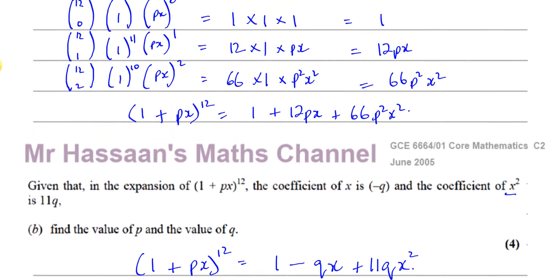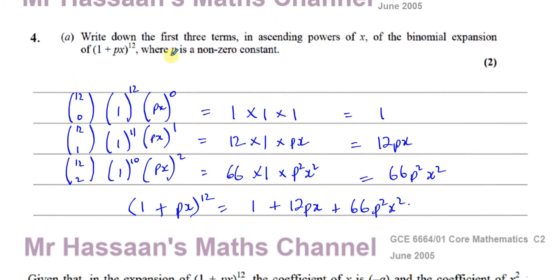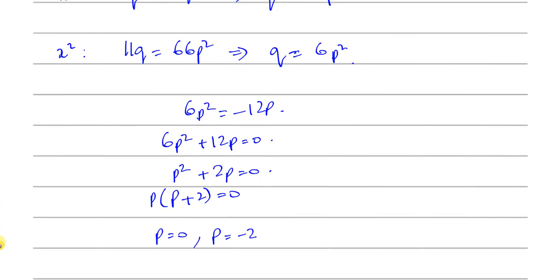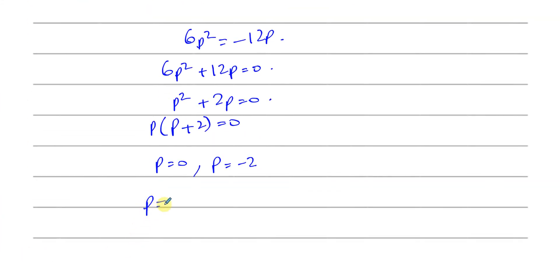Now, we're told in the beginning of the question that P is a non-zero constant. So we can see that P can't equal zero because of that statement. Therefore, P is equal to negative two. So that's our value of P.